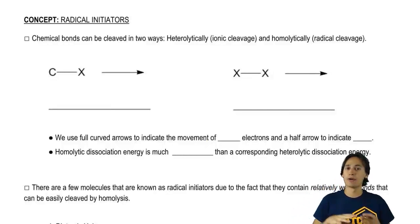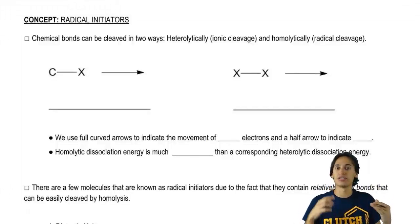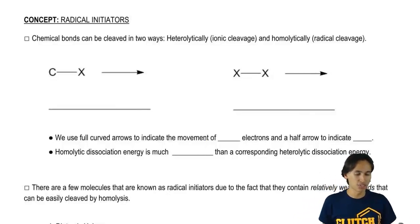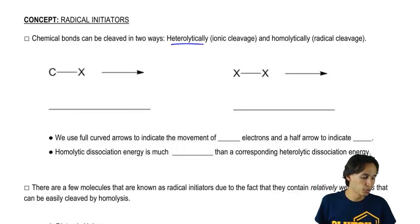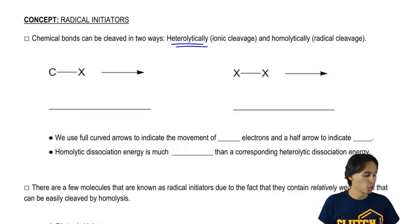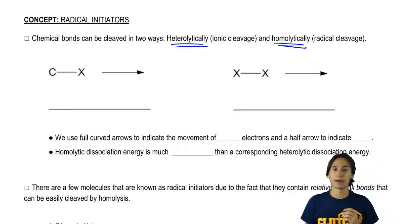First of all, let's just talk about how radicals break off differently than regular single bonds. Basically it turns out that single bonds can be broken in two different ways. They can be broken heterolytically or homolytically. Let me show you the difference between that.